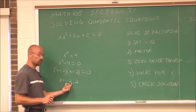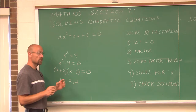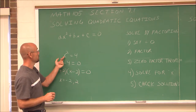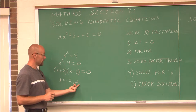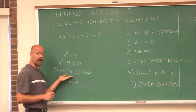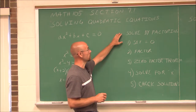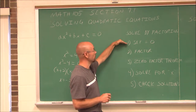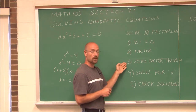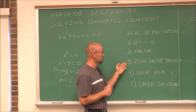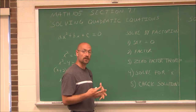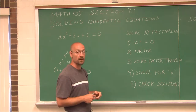And if I look at this factor, I can set this equal to 0: what minus 2 is 0? A positive 2. So we have two solutions: negative 2 and positive 2. We should always check our solutions. Negative 2 squared is positive 4 — true statement. Positive 2 squared is 4 — true statement. So to solve by factoring: set the equation equal to 0, factor it, use the zero factor theorem by setting each factor equal to 0, solve for x, and check our solutions.